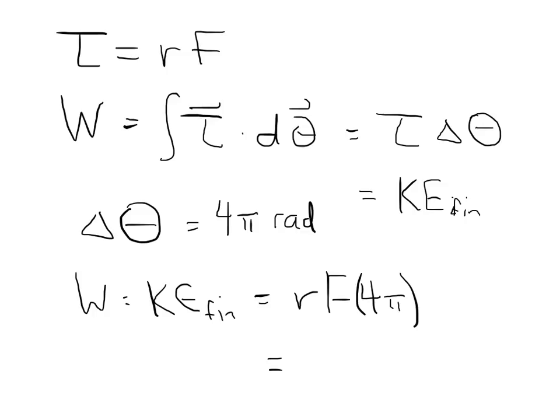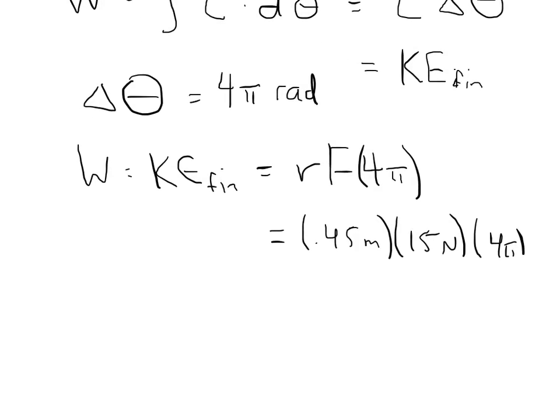When you plug all the numbers in, the diameter is 90 centimeters, so the radius is 45 centimeters or 0.45 meters. The force is 15 newtons. 4π is about 12 and a half. When we plug in all of our numbers and calculate, we get 84.82 joules. Because remember, newtons times meters are joules. That is our final kinetic energy, the first part of the problem.